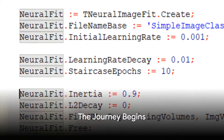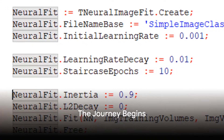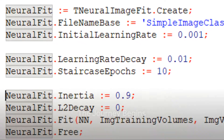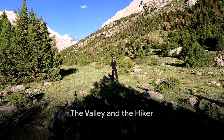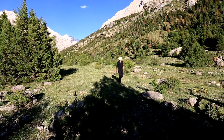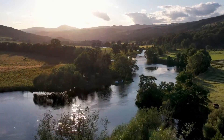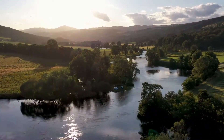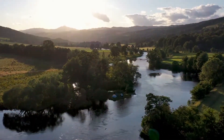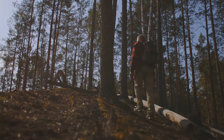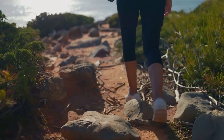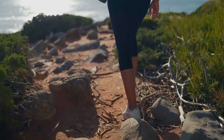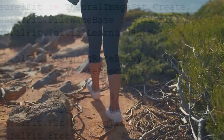Learning rate decay and staircase learning rate decay in neural networks are tools that you can use right away. Imagine you're a hiker trying to reach the bottom of a valley. The valley represents the minimum error of your neural network model. The steps you take are the learning rates, and your objective is to find the fastest route down without tripping or getting stuck.